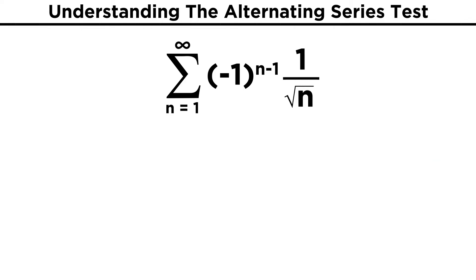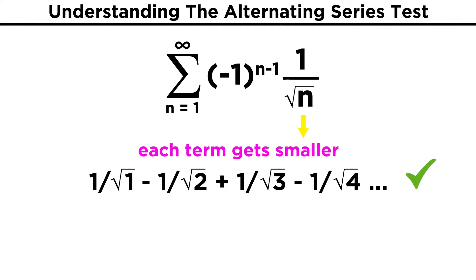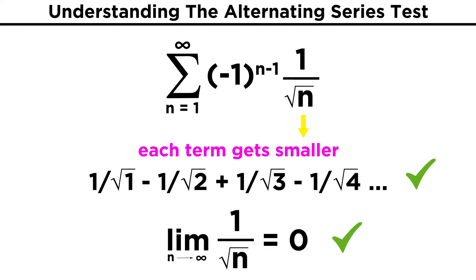Let's apply this to a few series to make sure this sinks in. Take this one that is the same as our previous example, except with root n in the denominator. Does each term in this series get smaller? As n increases, its square root increases, so the fraction gets smaller as we go. And in the limit of infinity, this term does become zero. Both criteria are met, and this sequence converges.